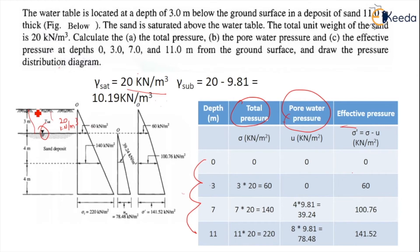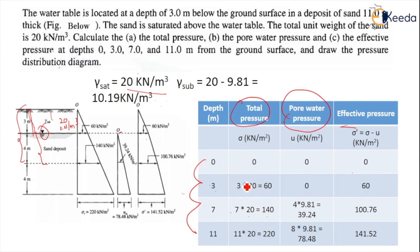At the 3 meter level: total stress = 3 × 20 = 60 kN per meter square. There is no pore water pressure, so U = 0, and effective stress = 60. At the 7 meter level (4 + 3): total stress = 7 × 20 = 140 kN per meter square. Pore water pressure = 4 × 9.81 = 39.24 kN per meter square. Effective stress = 140 minus 39.24 = 100.76 kN per meter square.